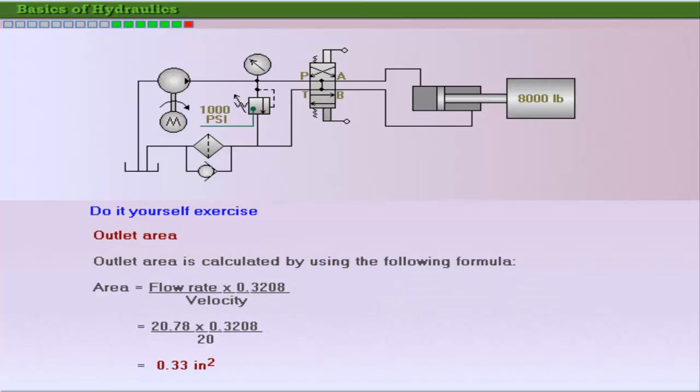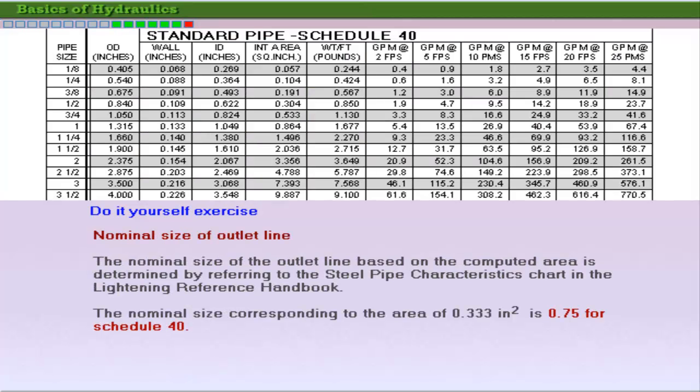Calculate the area of the pump outlet to determine its nominal size. Find the nominal size of the outlet line from the steel pipe characteristics chart in the Lightning Reference Handbook. The nominal size for the pump outlet line corresponding to the computed area of 0.33 square inches is 0.75 for schedule 40.